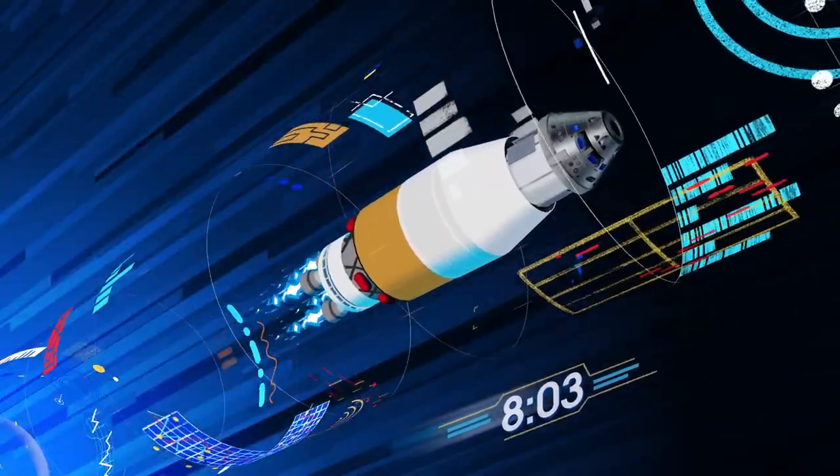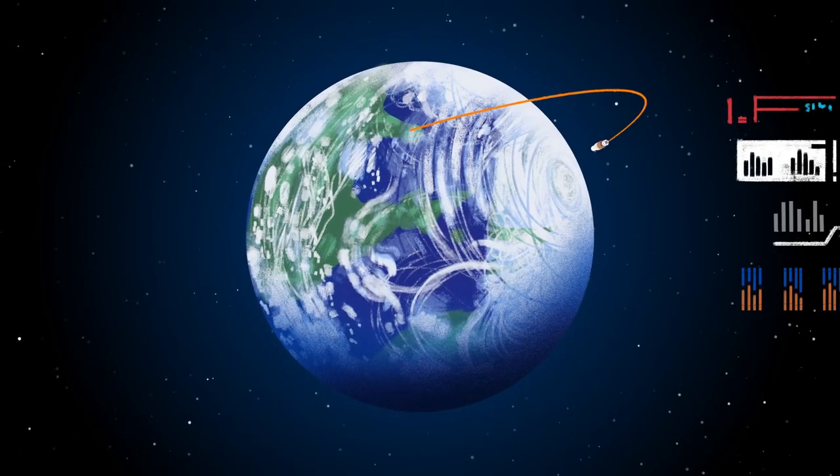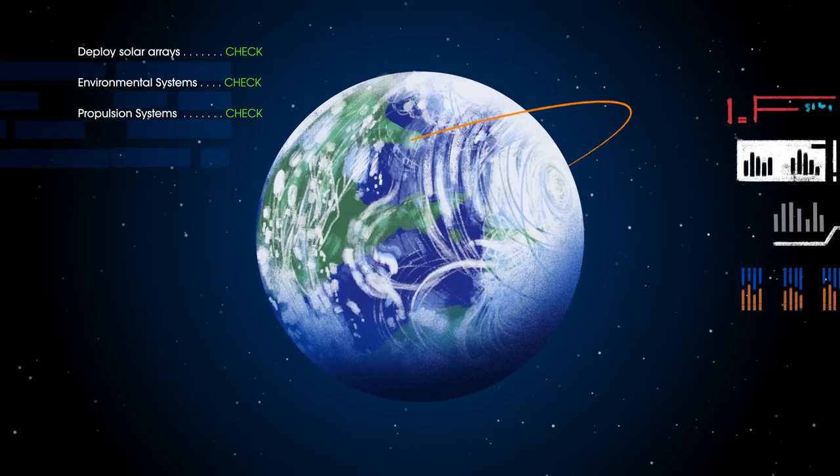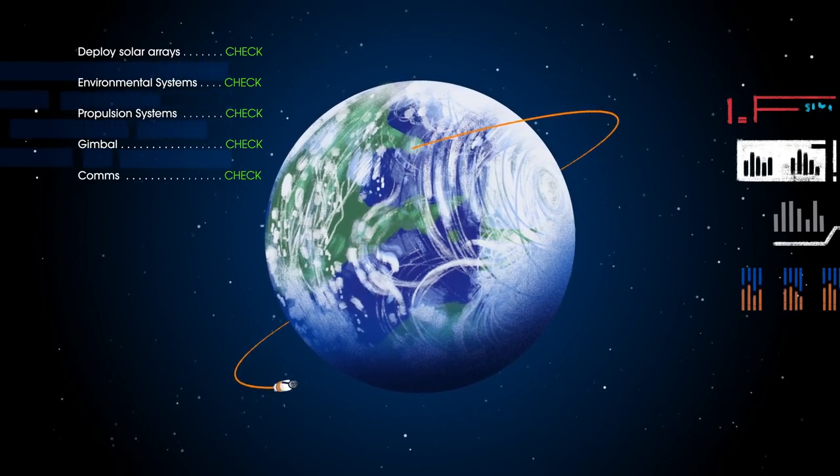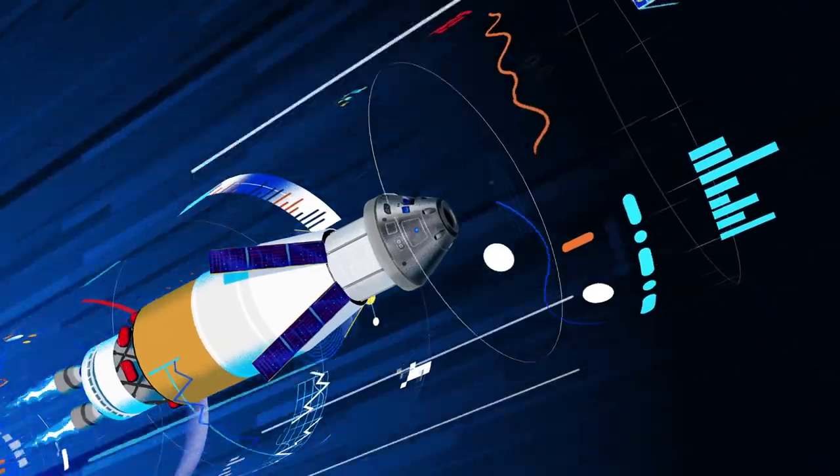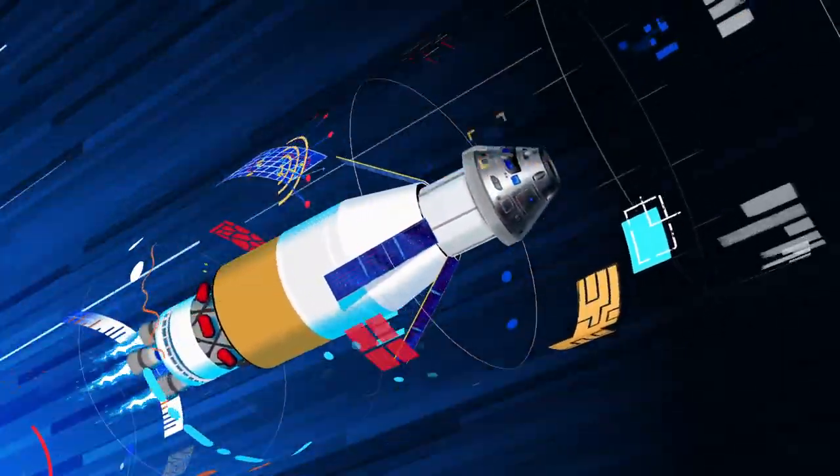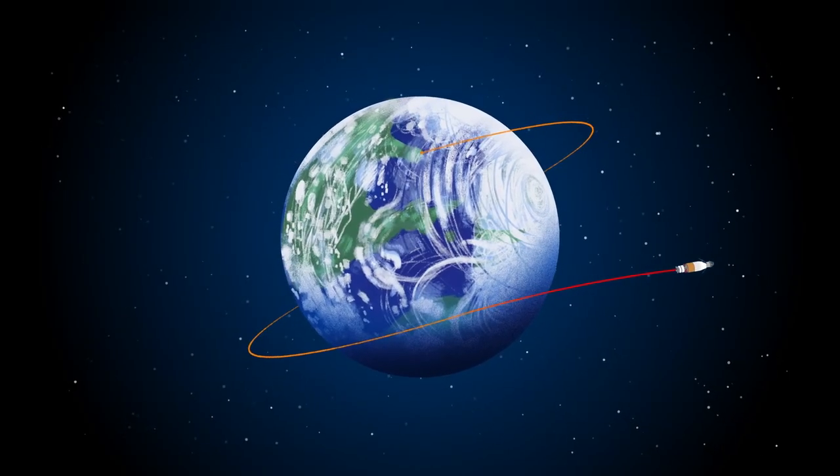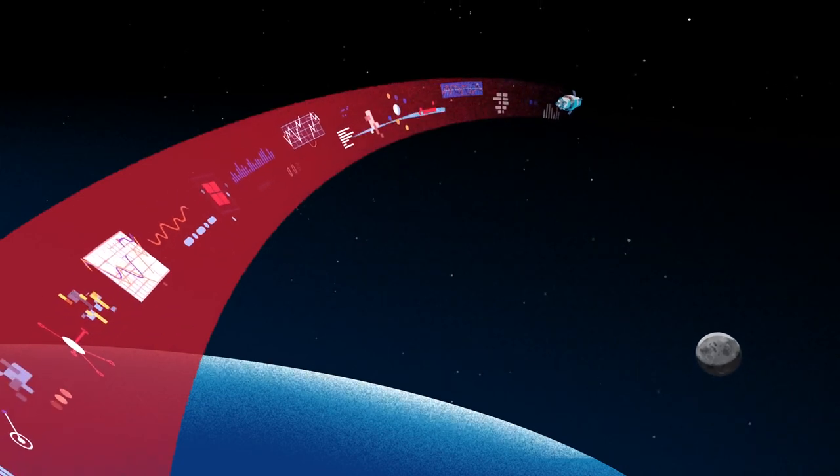The upper stage fires briefly, placing Orion into a parking orbit around the Earth. Here, the crew reconfigure the spacecraft and check systems to confirm everything is ready for deep space travel. With a go from mission control, the crew reignite the exploration upper stage engines to leave Earth entirely. The exact timing of this maneuver is critical to reach a speed that can escape Earth's gravitational pull, but also put Orion on a course that will intersect the Moon days later.